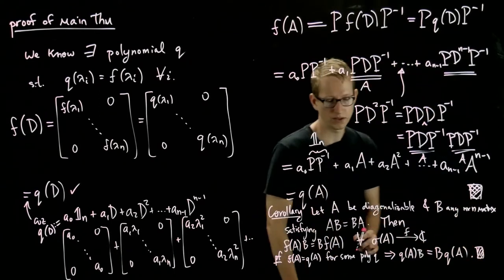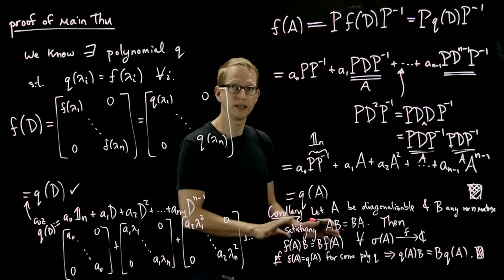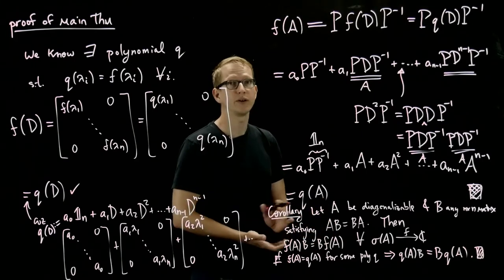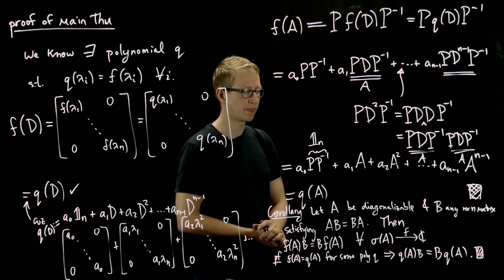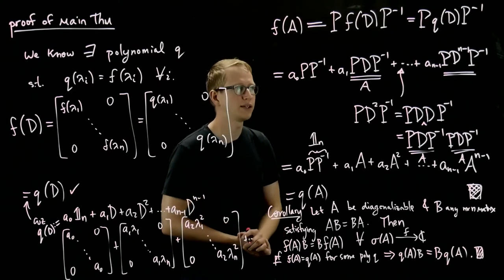And the interesting thing about this is that B can be any matrix whatsoever, and A only has to be diagonalizable for this to be true. So hopefully this is an interesting fact.